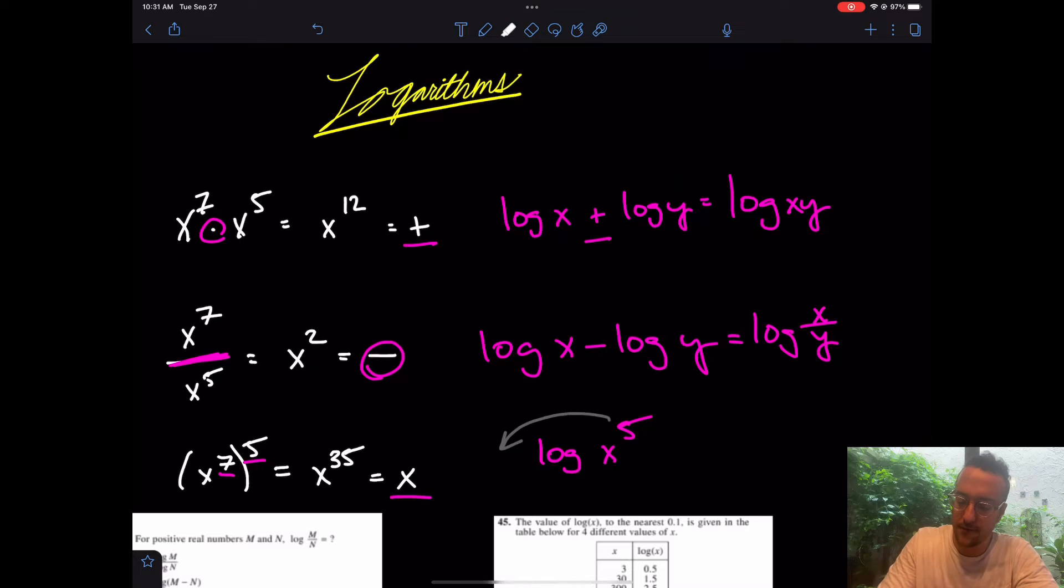Like I said, this is the most confusing one. But essentially, you can drop it down to the front, creating multiplication, like we said. Really, 5 times log of x.